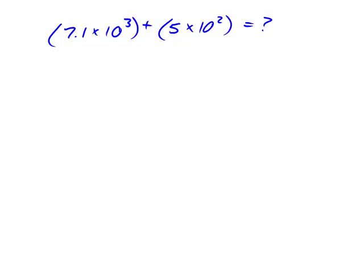Here I have two scientific notation numbers that I want to add together, and the process of adding scientific notation numbers is that you have to shift one of those exponents to match the other exponent, and then you can add the coefficients.